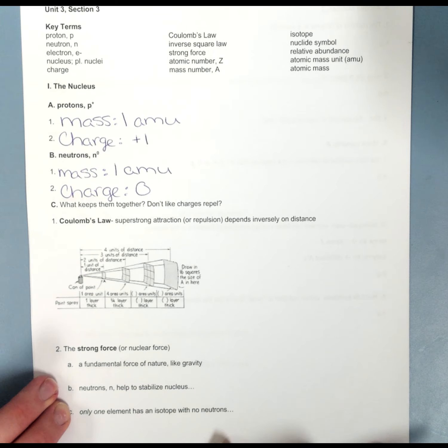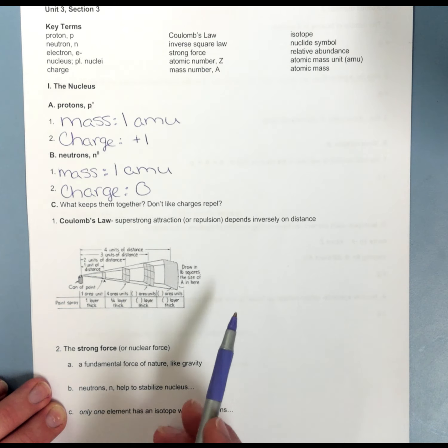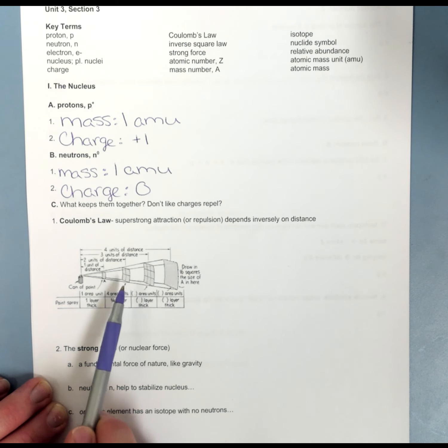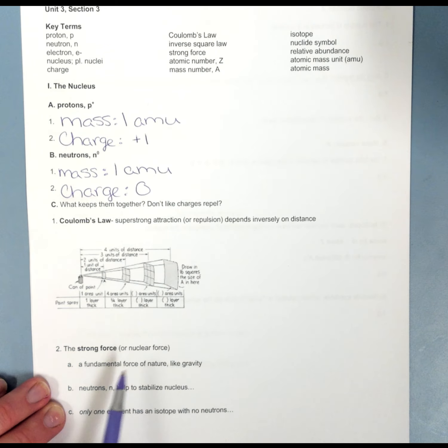We're looking at what holds an atom together. Coulomb's Law holds an atom together. The attraction or repulsion depends inversely on distance. This little diagram right here is just showing you that if I were to spray a wall right here, it's going to cover less area but more paint. If I spray it a little bit further, my layer of paint is going to be thinner, but I'm going to cover more surface area.